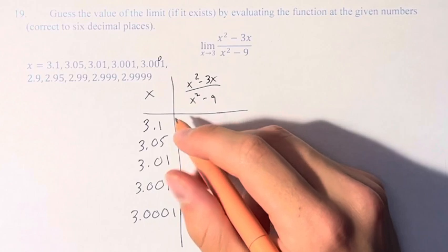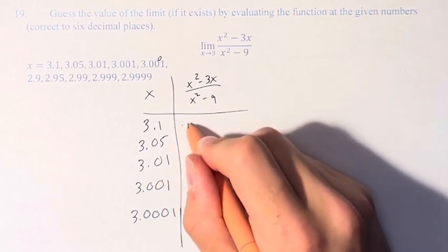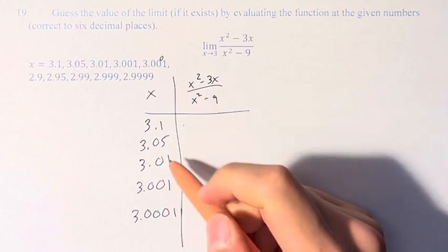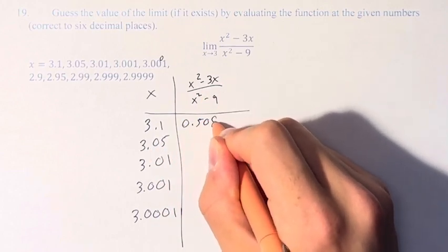And the value of the function to six decimal places is as follows, right? You just have to plug 3.1 into x for here, 3.05, and so on.